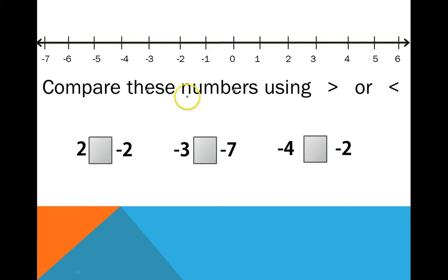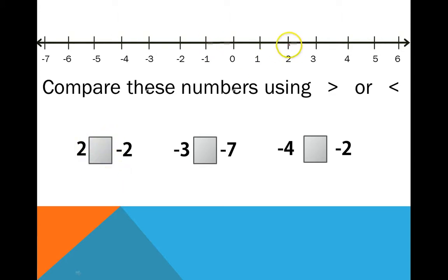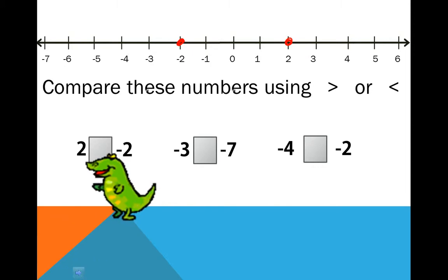Let's compare these numbers using the greater than or less than sign. Remember, these signs want to open up towards the greater number — the open mouth wants to open towards the greater number. The alligator wants to eat more. So for 2 and negative 2: 2 is further right on the number line, so the alligator is going to want to eat 2 — it's going to face that 2.